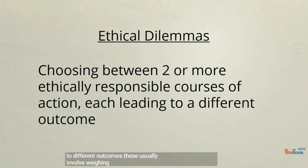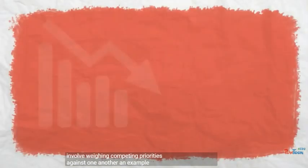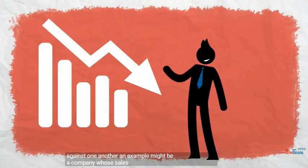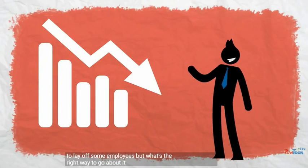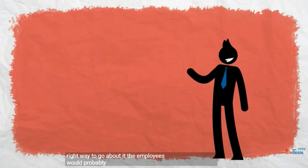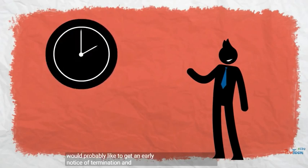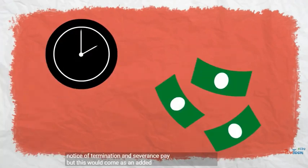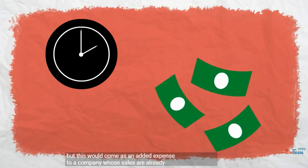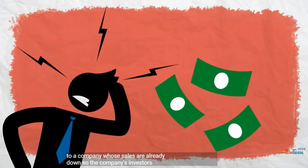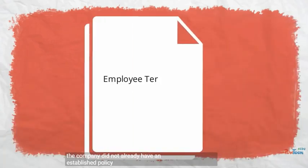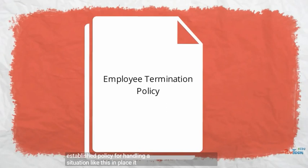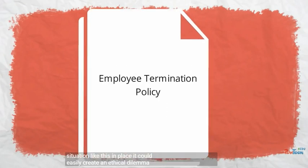These usually involve weighing competing priorities against one another. An example might be a company whose sales are down and needs to lay off some employees, but what's the right way to go about it? The employees would probably like to get an early notice of termination and severance pay, but this would come as an added expense to a company whose sales are already down, so the company's investors might prefer a more cost-saving solution. If the company did not already have an established policy for handling a situation like this in place, it could easily create an ethical dilemma.